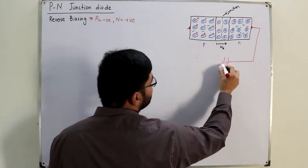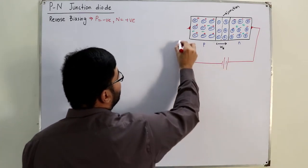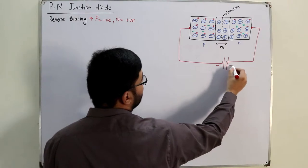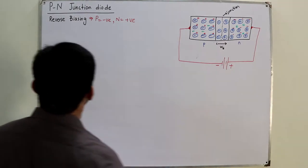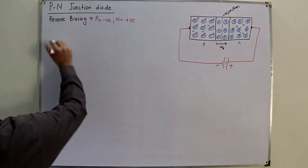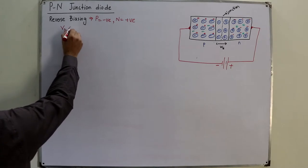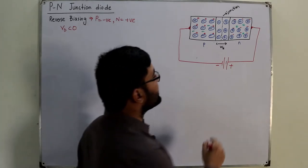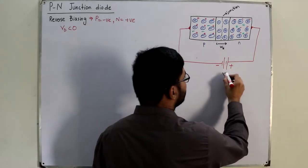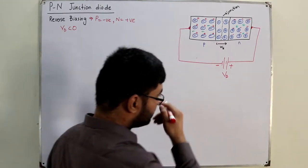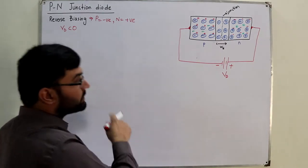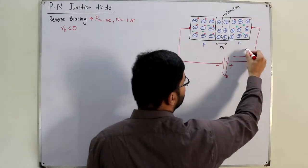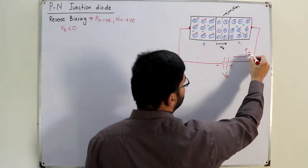Now you have the N side connected to the positive terminal of the battery and the P side connected to the negative terminal. In this case we consider that VD is negative — VD is the applied voltage — and we have a conventional current direction ID across the diode.